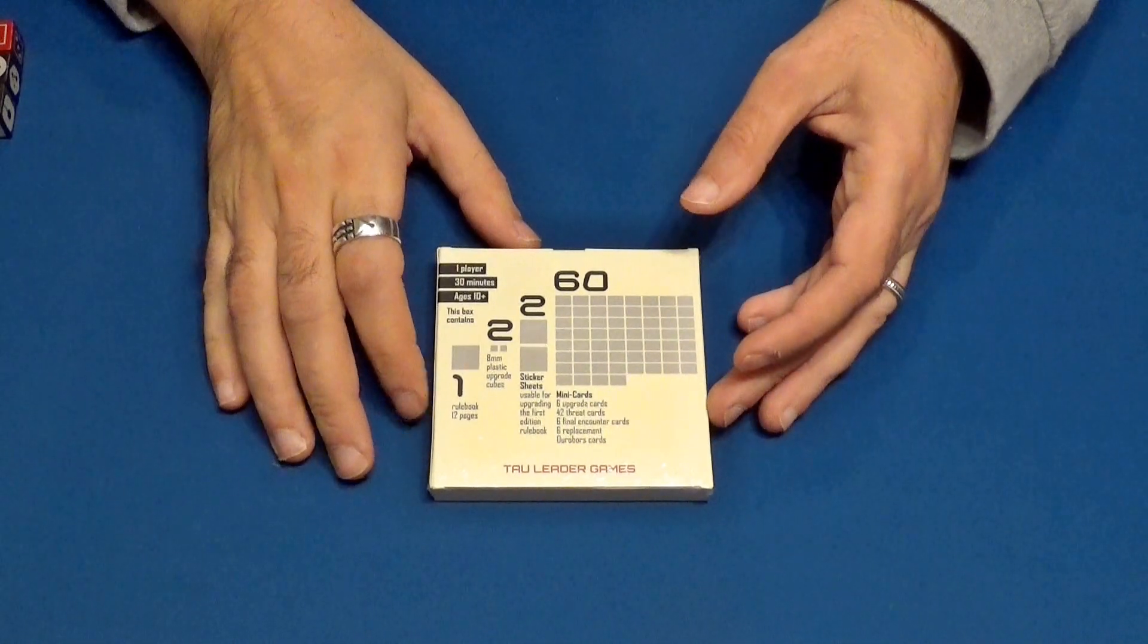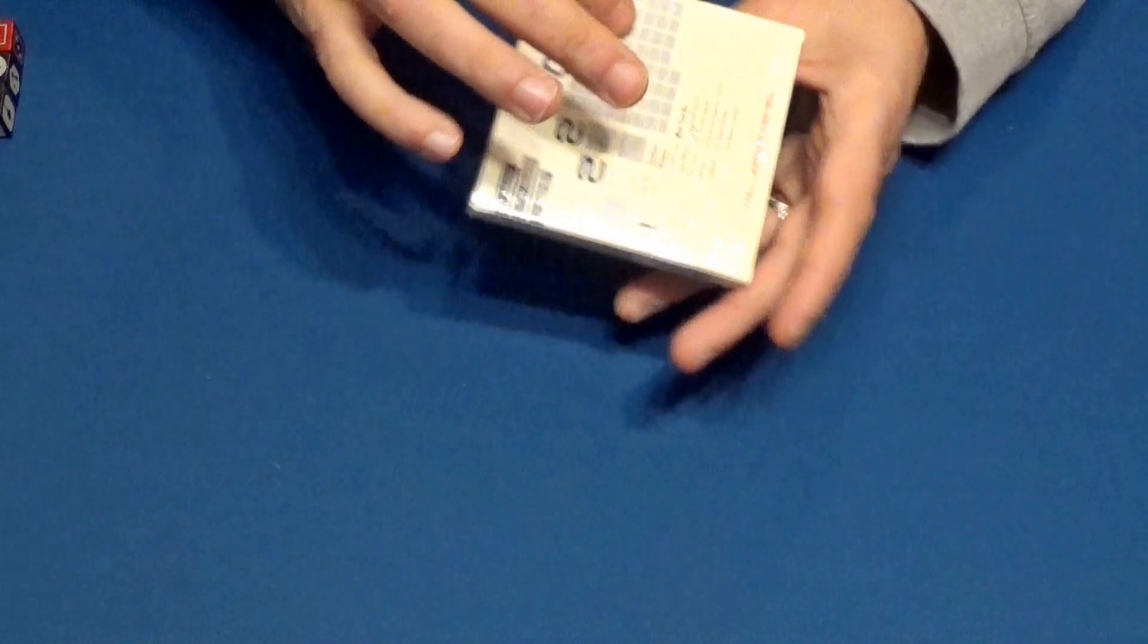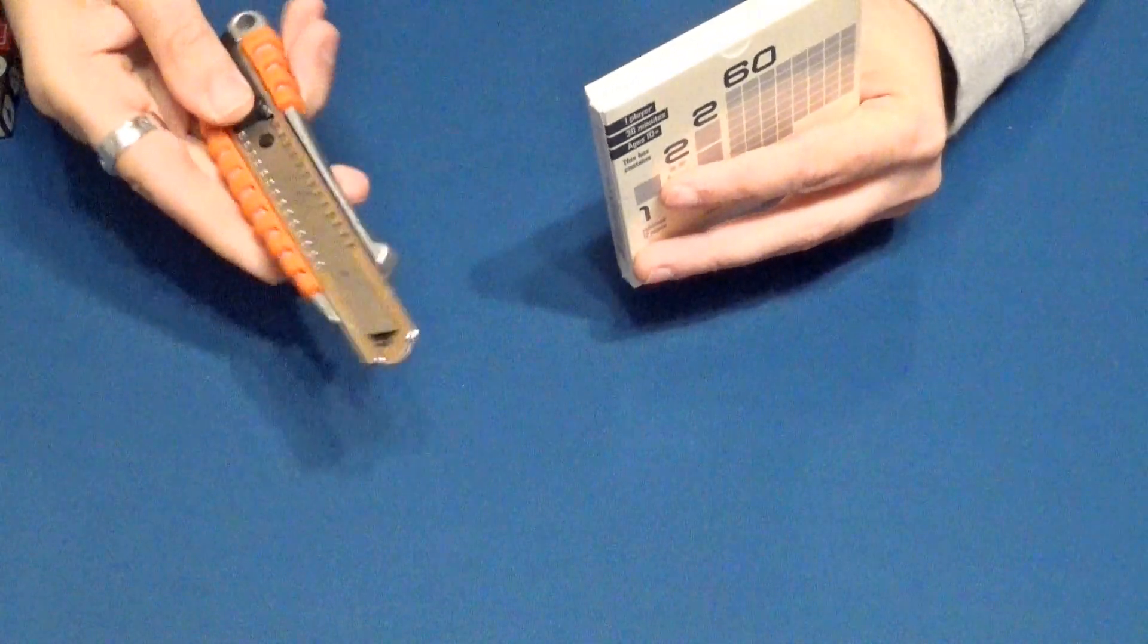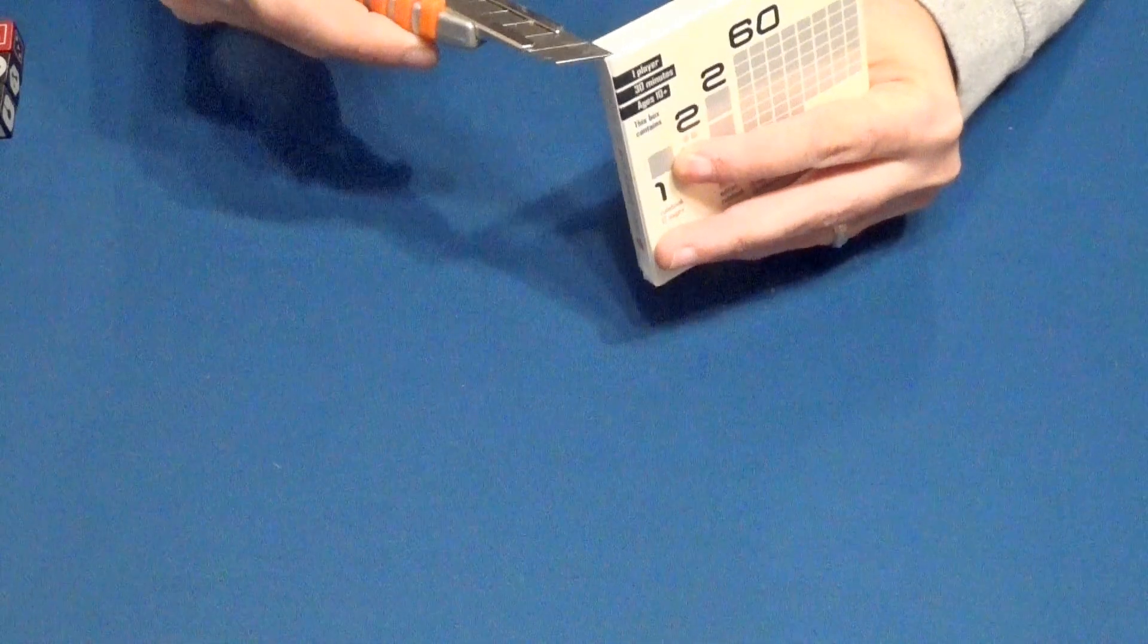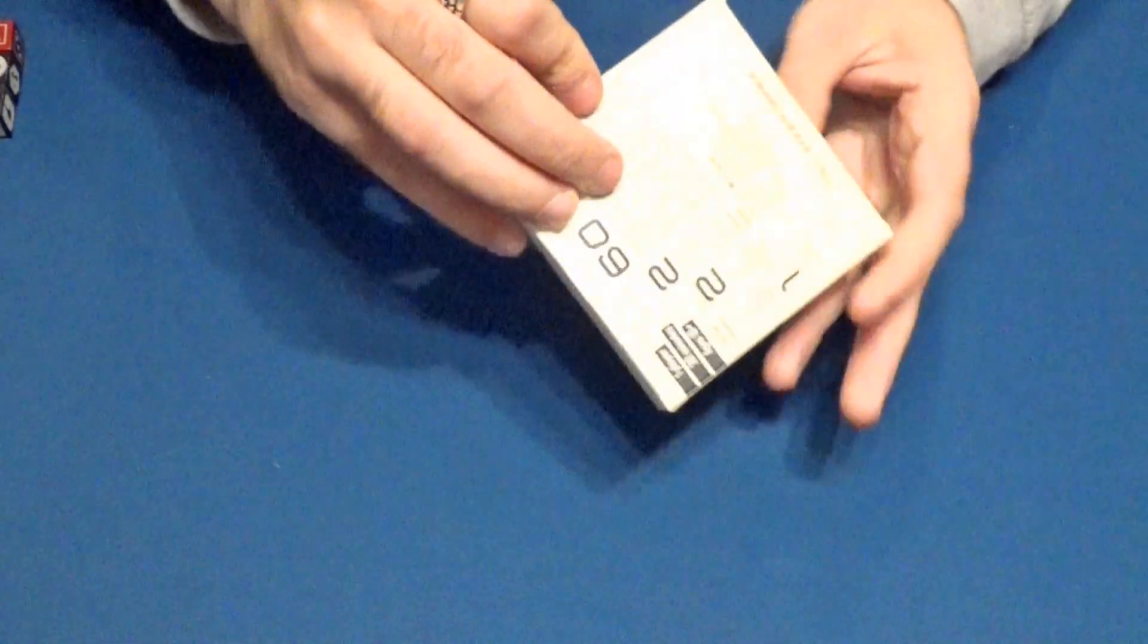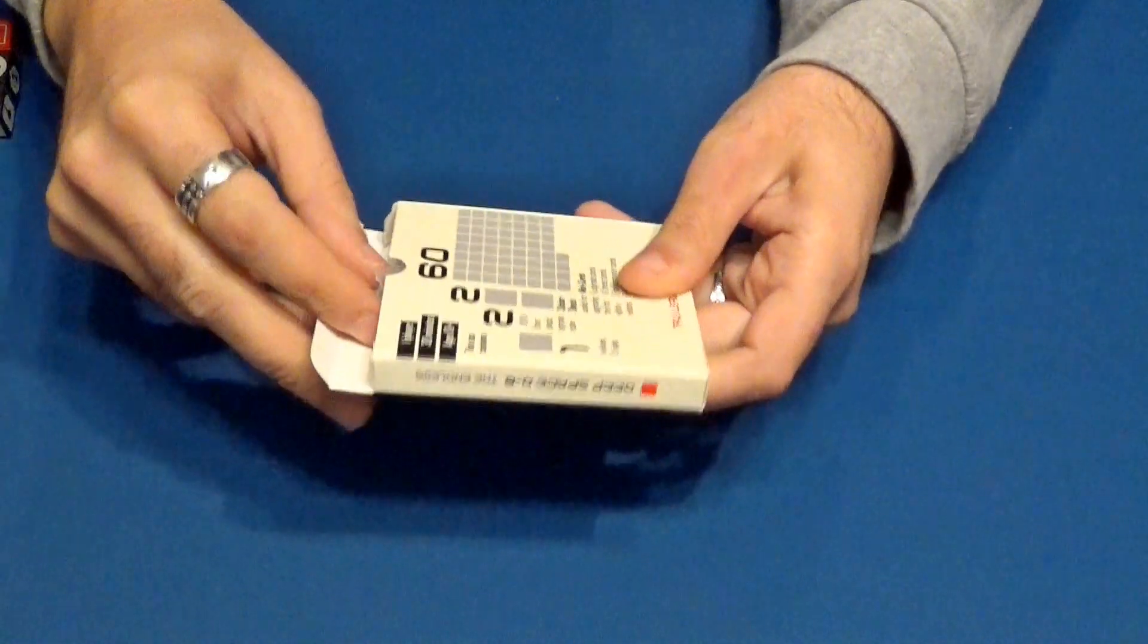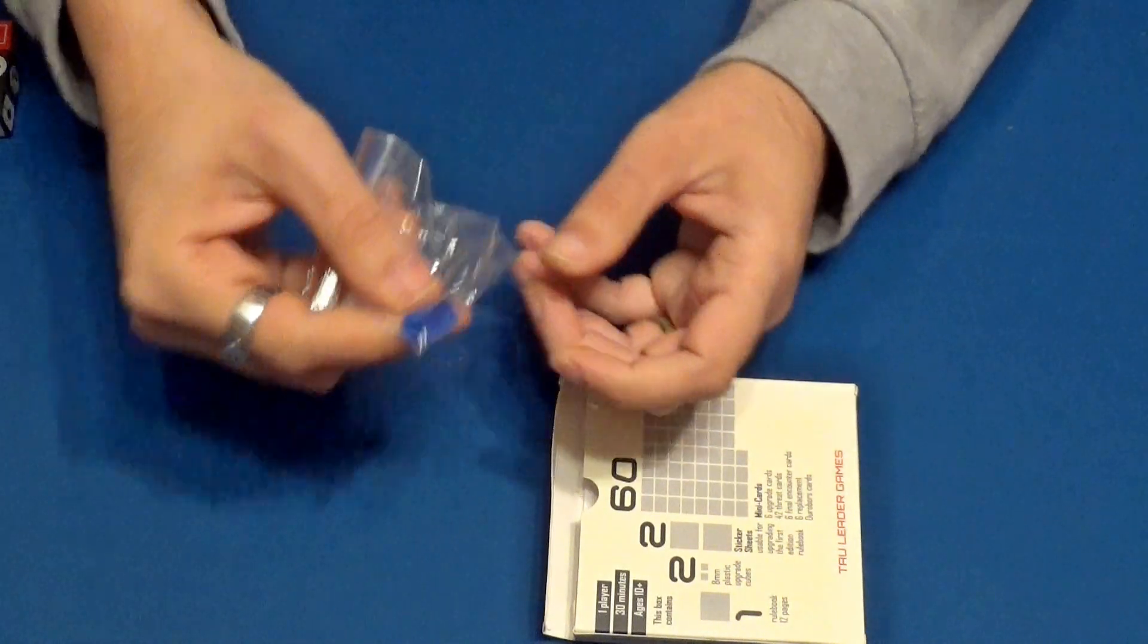Tenemos aparte esta cajita que tenemos aquí del mismo juego. Después también Deep Space D6. Que nos pone que hay unas pocas cositas más. Vamos a verlas. Vamos a quitar también lo que es el plástico. Lo ponemos por aquí. A ver si sale ya de un solo tiro. Tenemos que hacer un corte más. Creo yo que con esto bastará.